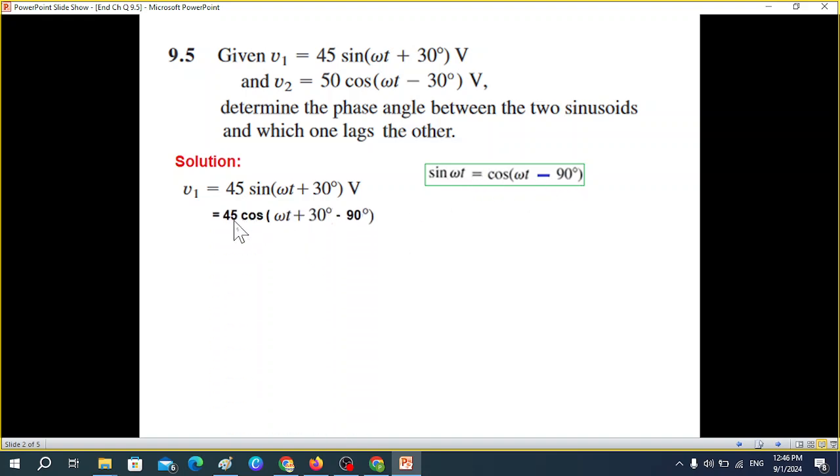So we get 45 cosine(ωt - 60°). The second signal was already in proper cosine form. When we compare these two, we can see the angle difference is 30 degrees. So the answer is: the phase angle between the two sinusoids is 30 degrees.